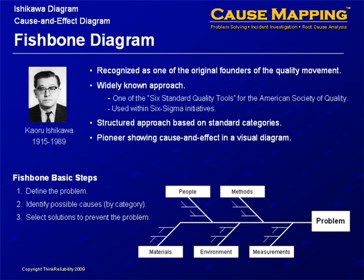Karo Ishikawa developed the fishbone. It is widely recognized — it's part of the six standard quality tools for ASQ and it's part of every Six Sigma program. The fishbone diagram is also known as the Ishikawa diagram, or the cause and effect diagram. Ishikawa is one of the first people to visually lay out cause and effect. Defining the problem is over on the right, and then it identifies causes by category to the left, and then specific solutions can be identified.